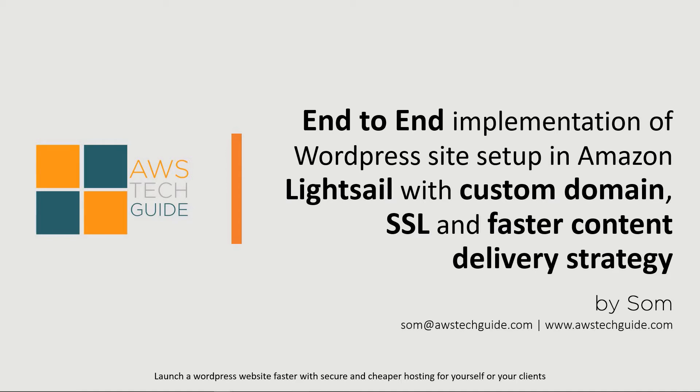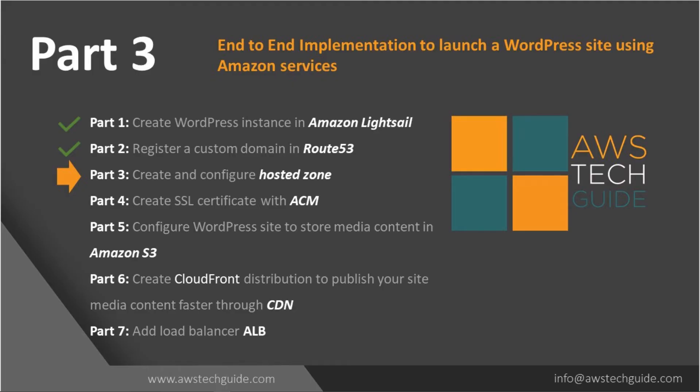Hello there, welcome to part 3 of this end-to-end implementation of a WordPress website. If you have not checked parts 1 and 2, I request you to check the video description for the links. In part 1, we completed WordPress instance creation in Amazon Lightsail. In part 2, we completed how to register a custom domain in Route 53. Now in part 3, I will show you how to create a hosted zone and configure it.